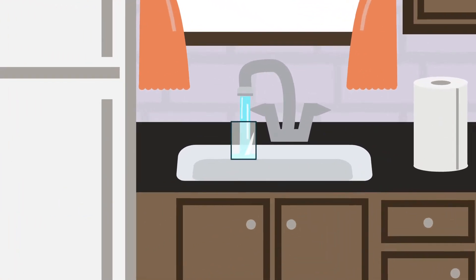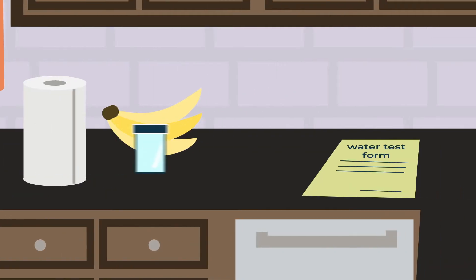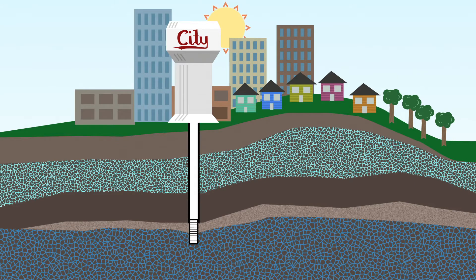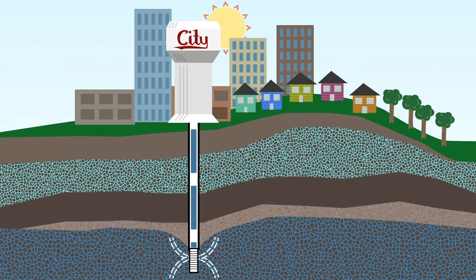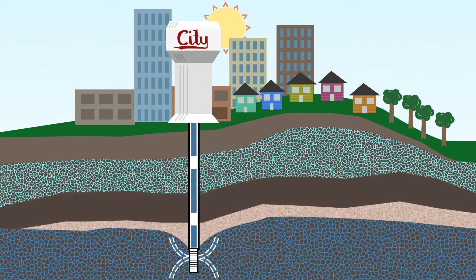Individual well owners are responsible for making sure their water is safe to drink. Deep municipal wells are often less vulnerable to contamination because pollution needs to travel through multiple layers of sand, rock, and clay to reach the well.